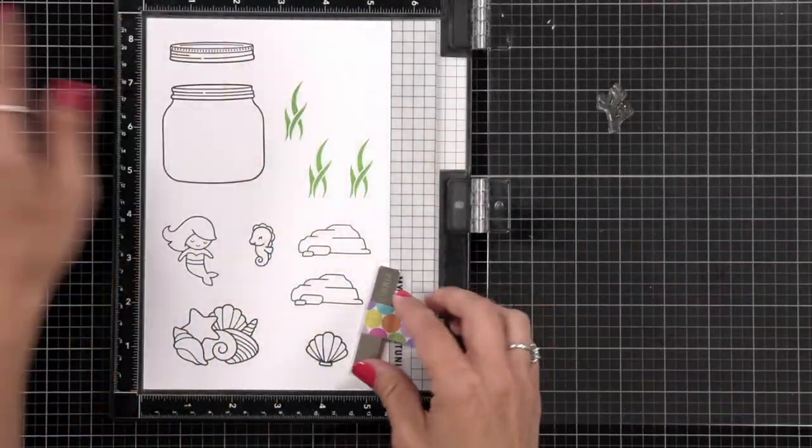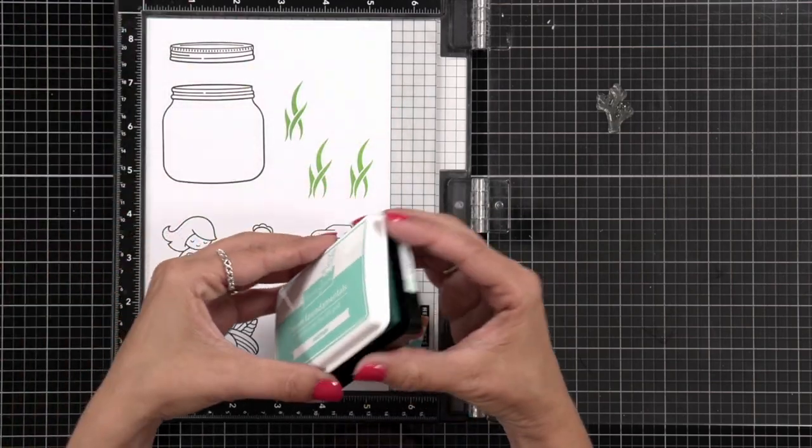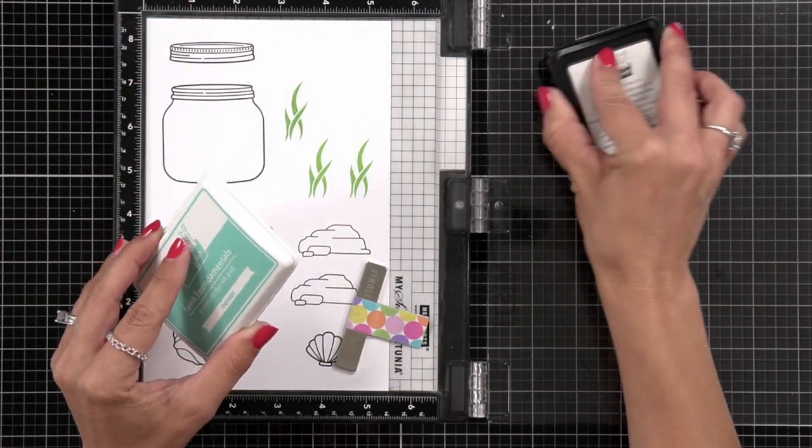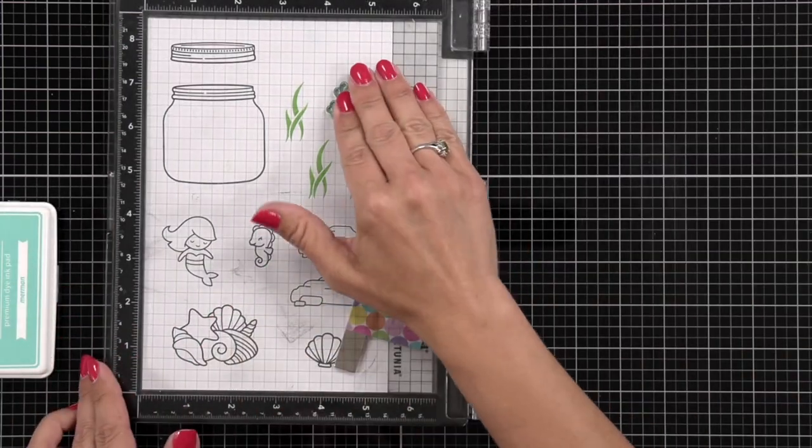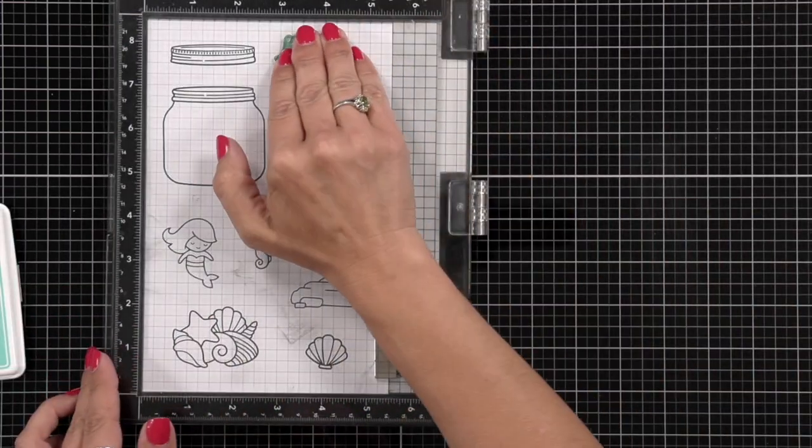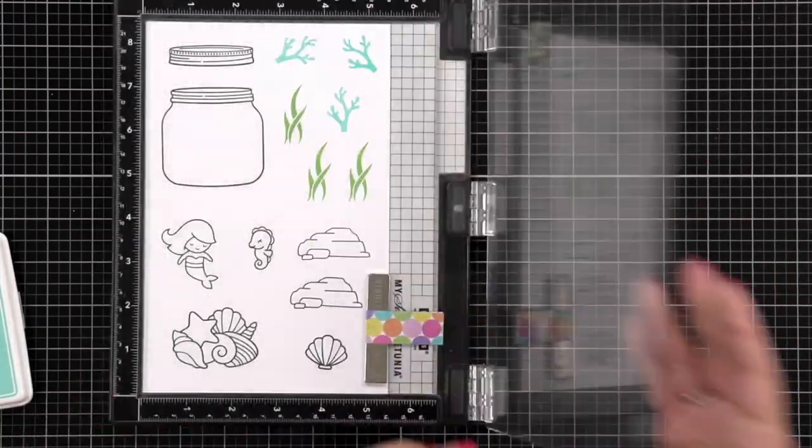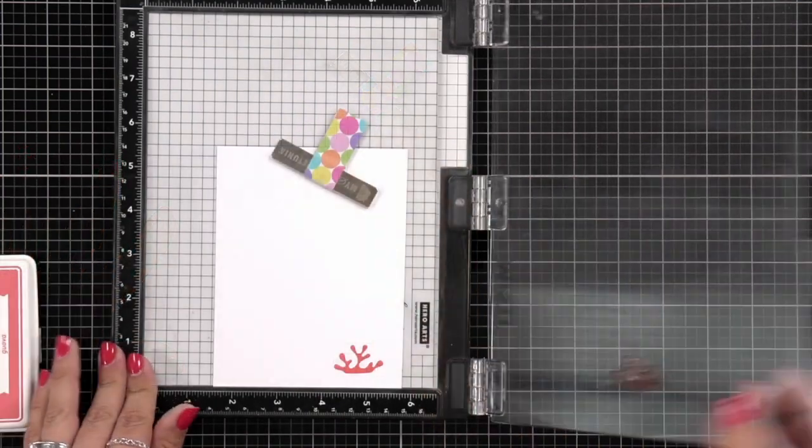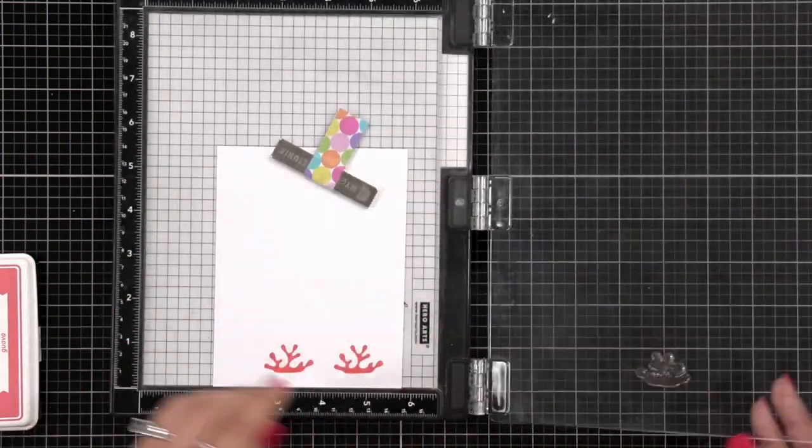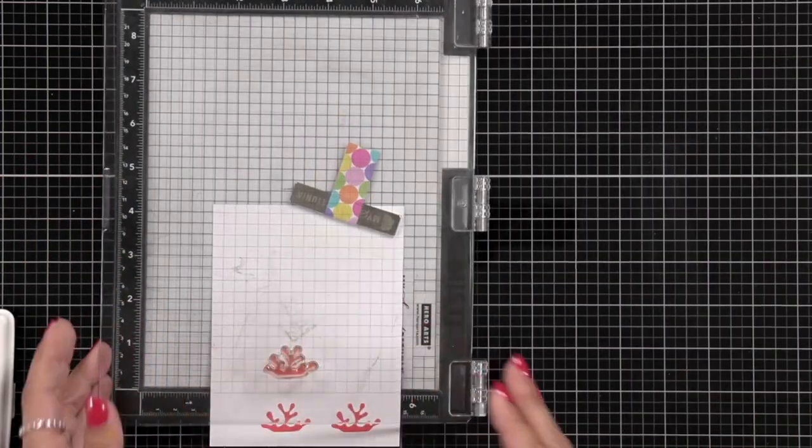Now I have another piece. These are off of the Mermaid For You stamp set. This one I'm going to ink up in the Merman ink, so just a really nice kind of aqua color. You can use whatever you may have on hand. I was running out of room on this piece so I brought in another sheet of the Express It cardstock. And this image I'm stamping in the Guava ink.